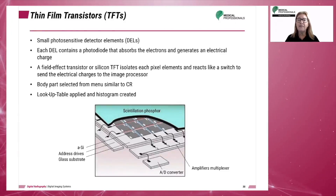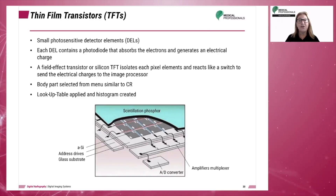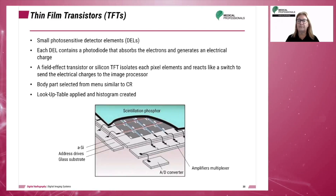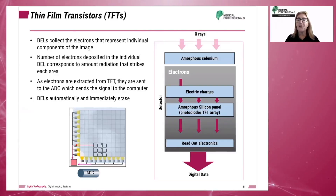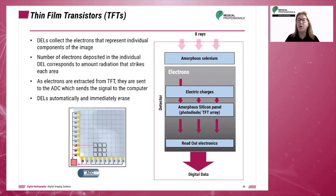The thin film transistor is constructed into a network of pixels or detector elements. Each detector element has a switch and a storage area. When the switch is activated, the stored signal is sent to the computer. The detector elements collect the electrons that represent the individual components of the image, and the number of electrons deposited in the individual DELs corresponds to the amount of radiation that strikes each area.